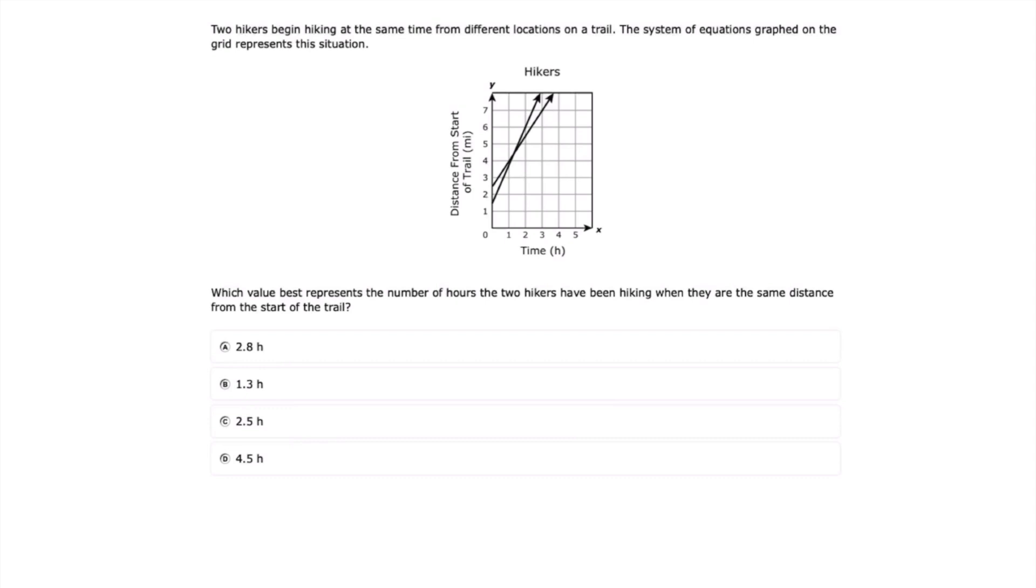Which value best represents the number of hours the two hikers have been hiking when they are the same distance from the start of the trail? So this problem wants to know when are these two hikers going to be the same distance from the start of the trail. This is the same thing as finding the solution to our system of equations.